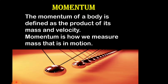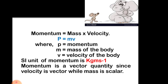Momentum is calculated as the product of mass and velocity. It is represented by P, so P = MV, where M is mass and V is velocity. The SI unit of mass is kilogram, and the SI unit of velocity is metre per second (m s⁻¹). So the SI unit of momentum is kilogram metre per second (kg m s⁻¹). Momentum is a vector quantity since velocity is a vector quantity, while mass is a scalar quantity.